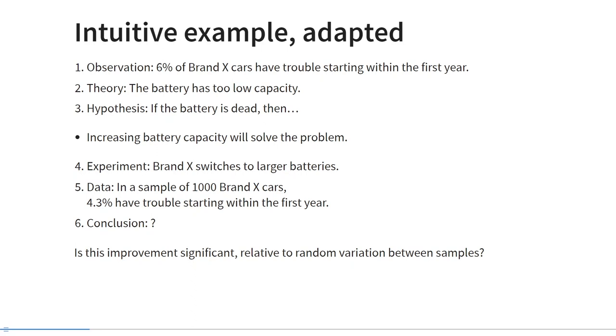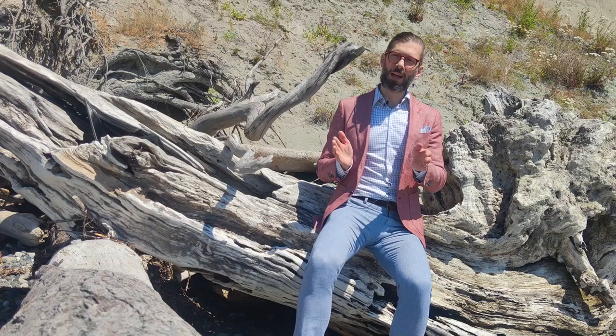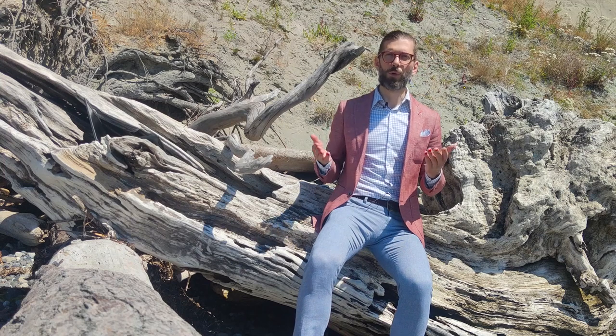The manufacturer conducts an experiment: this car brand switches to installing larger batteries in their new models. Then they collect data. In a sample of 1,000 cars of this brand, after increasing the battery capacity, 4.3% have trouble starting within the first year. So what conclusion do we draw? Clearly 4.3% is lower than 6%, but one could ask: is that decrease larger than the difference you could expect based on pure chance? Or in other words, is this decrease significant relative to the random variation we would expect to observe between repeated samples?